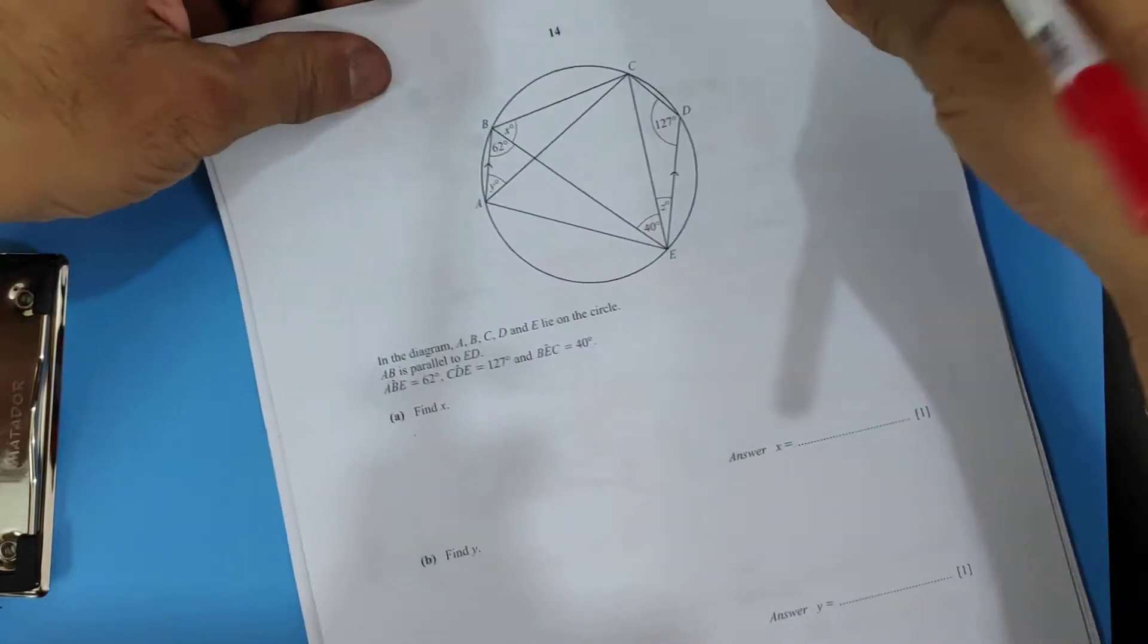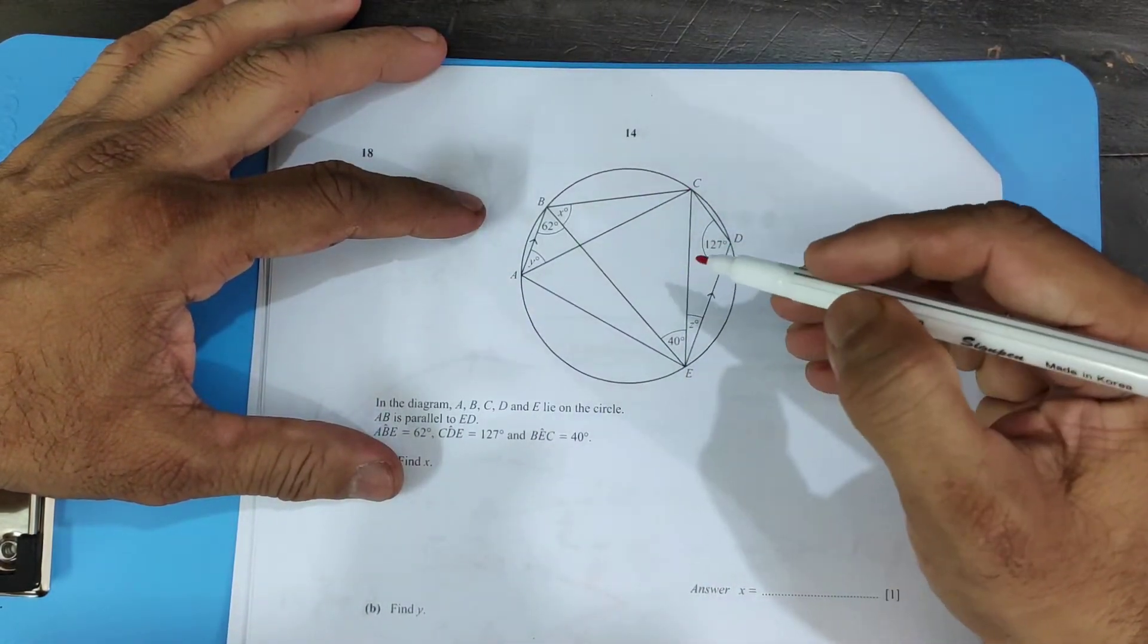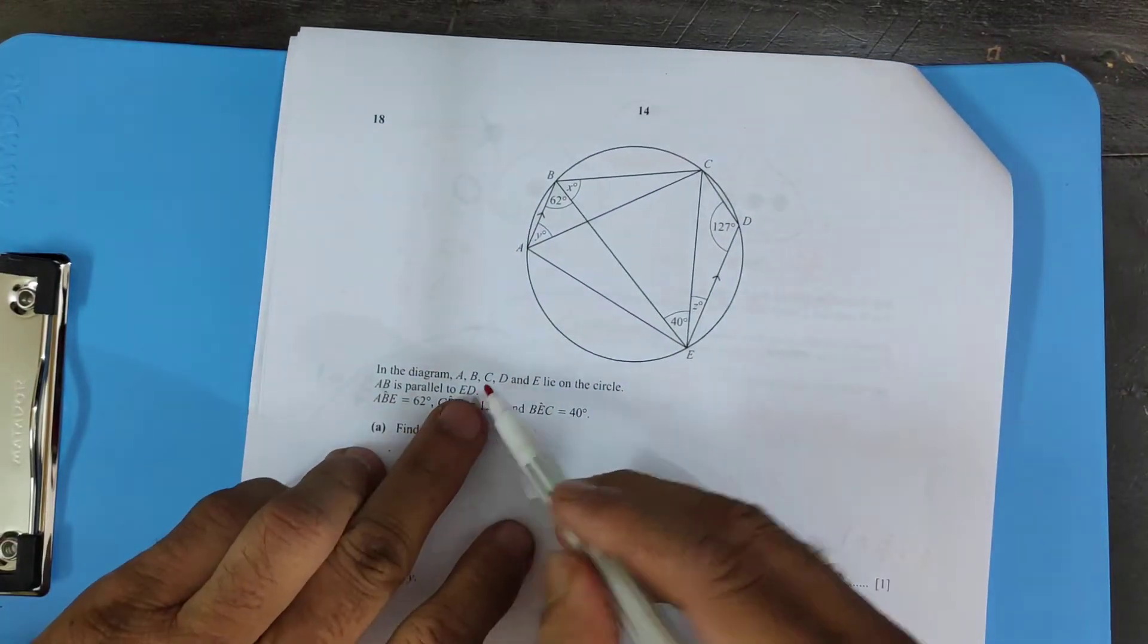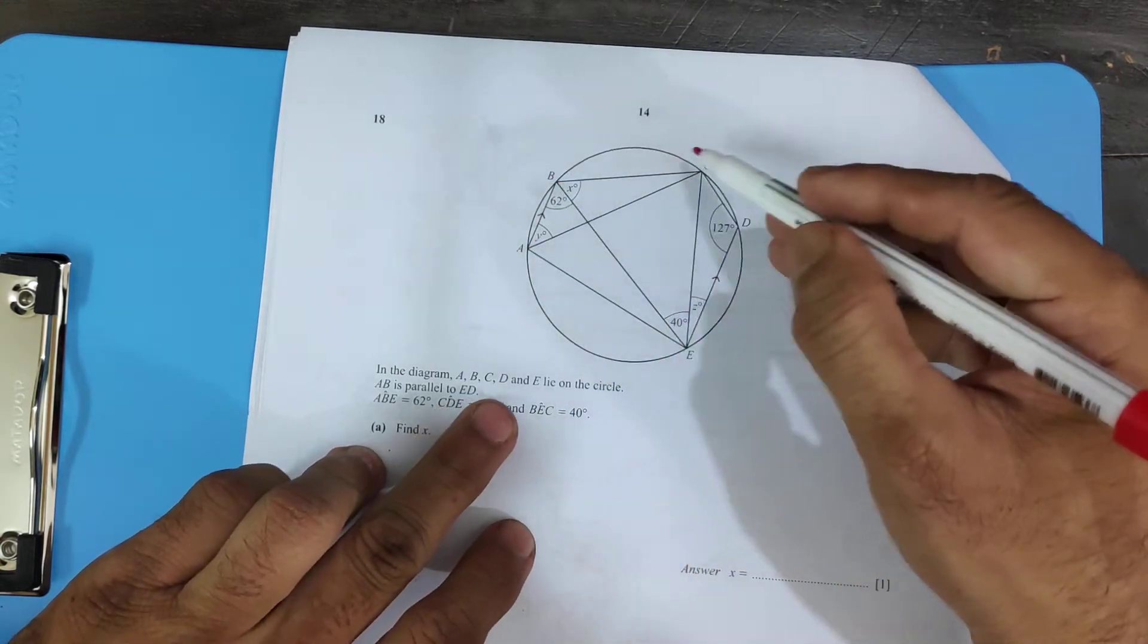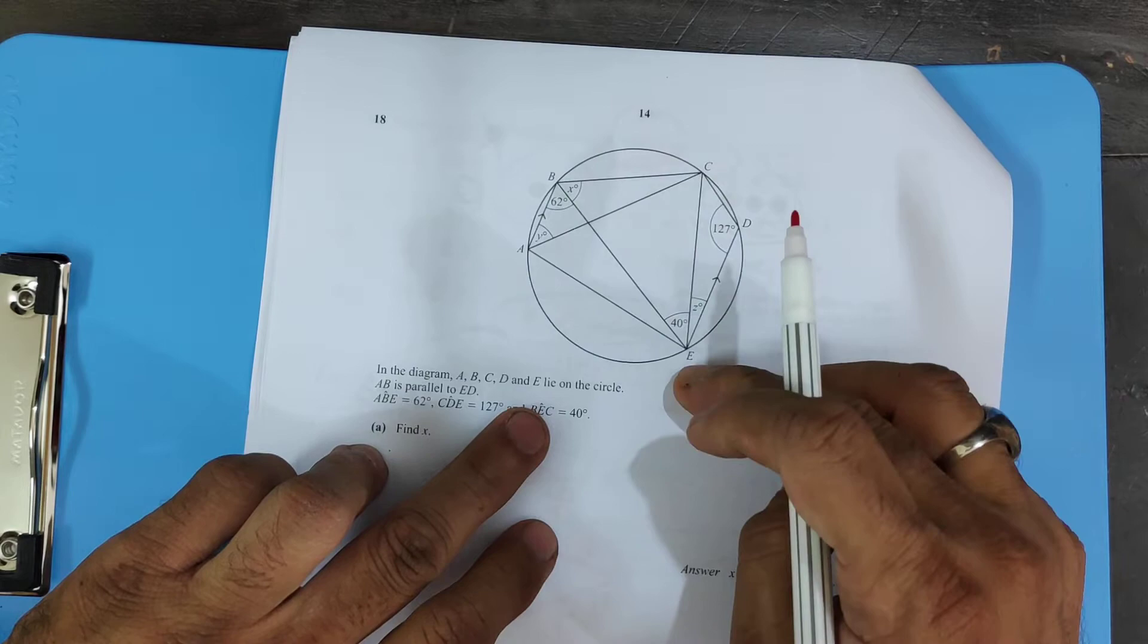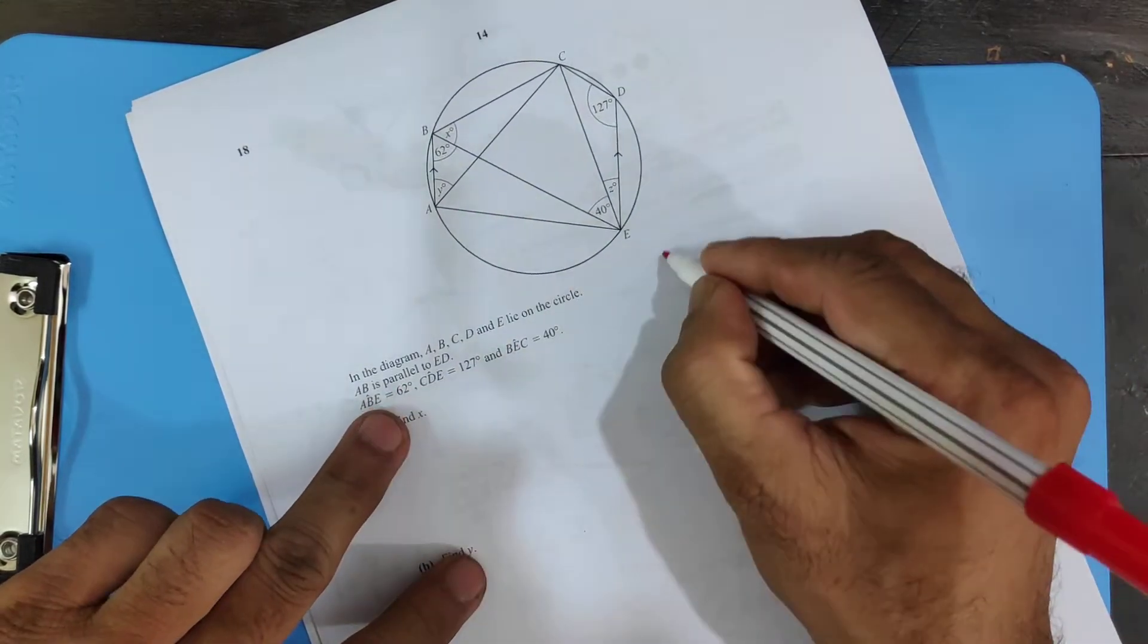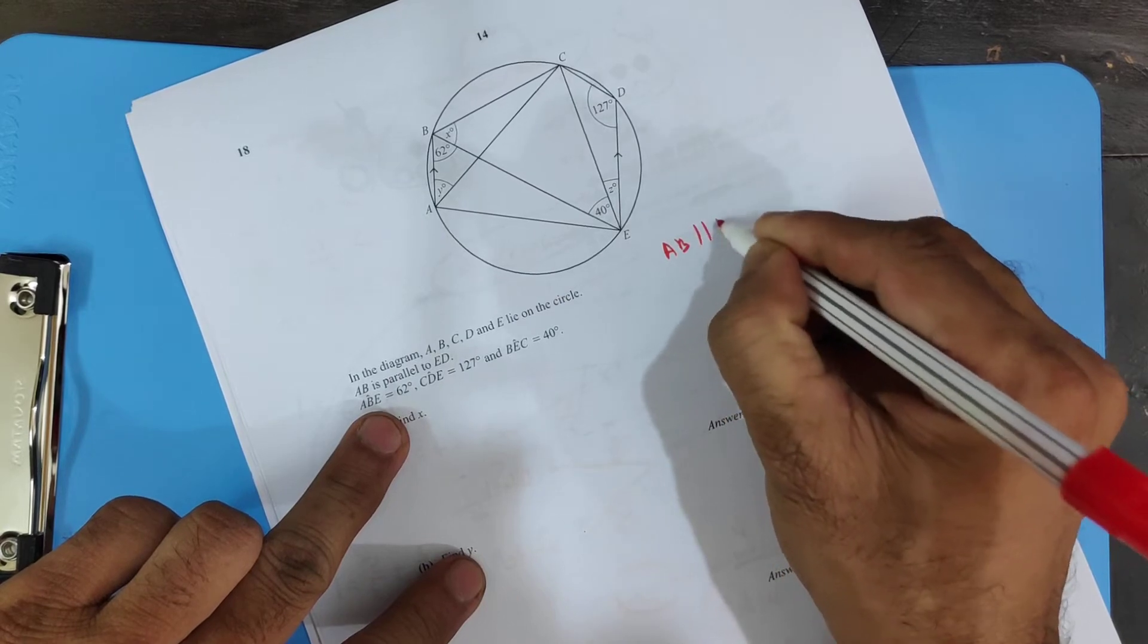Question number 18 is circle theorem. In the diagram, a b c d and e lie on a circle. All these vertices lie on the circle. A b is parallel to e d. This is very important. A b is parallel to e d. We need to remember that, sometimes we're going to use that.